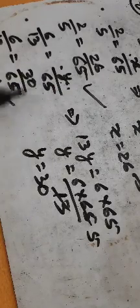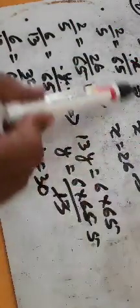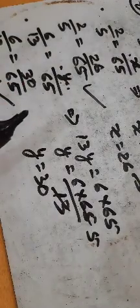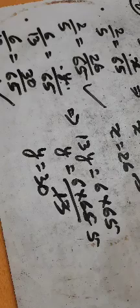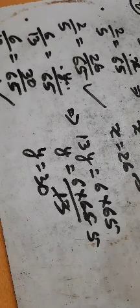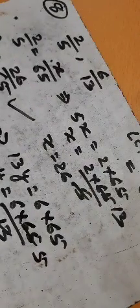Rational number in standard form means the rational number is in its lowest terms — the common factor of numerator and denominator should be one — and the denominator should always be positive.